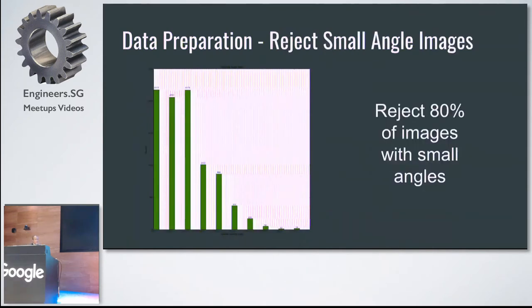So as I mentioned earlier, I had to reject the small angles. So what I did here, I rejected 80% of the images with small angles randomly, as I go through the training. As I go through each epoch, I'll just randomly pick out 20% of the small angles only.